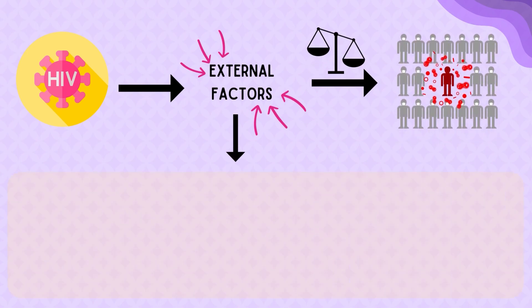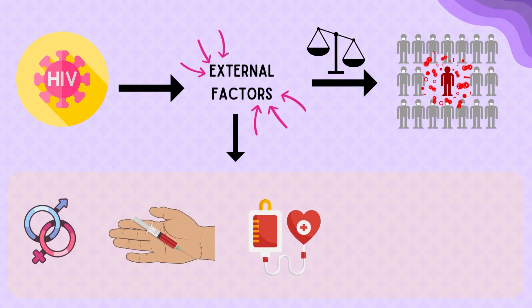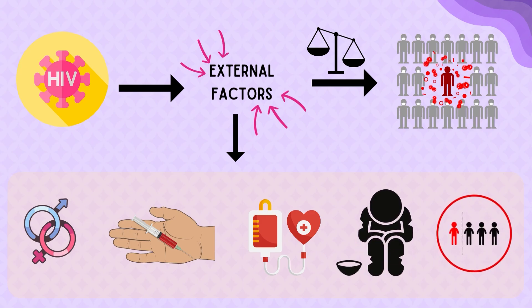This includes risky behavior such as unprotected sexual contact, sharing needles, and receiving blood transfusions. Factors such as poverty, lack of access to healthcare, and stigma surrounding HIV can also contribute to the spread of the disease.